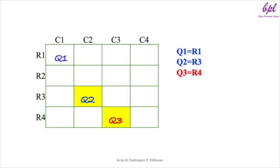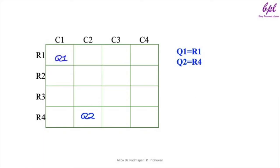Since no valid position is available for q3, we backtrack to queen 2 and try a new position. We had placed q2 in r3. We now place q2 in r4, i.e. q2 = r4, which does not violate any constraint. Then we start placing q3 again. We try q3 = r1 which violates the row constraint with q1. Then we place q3 in row 2: q3 = r2, and this position does not violate any constraint.